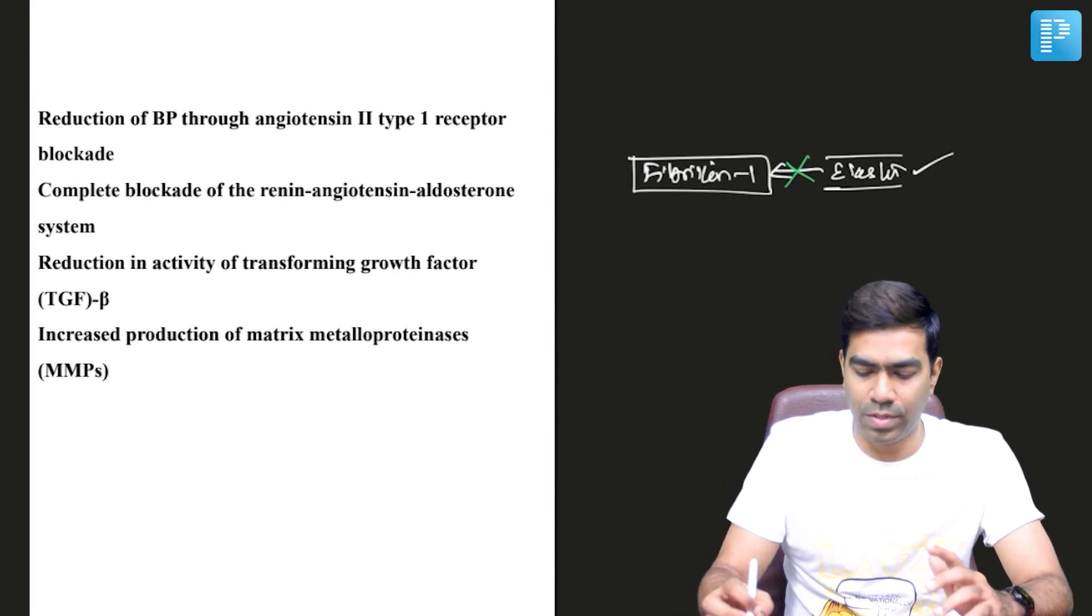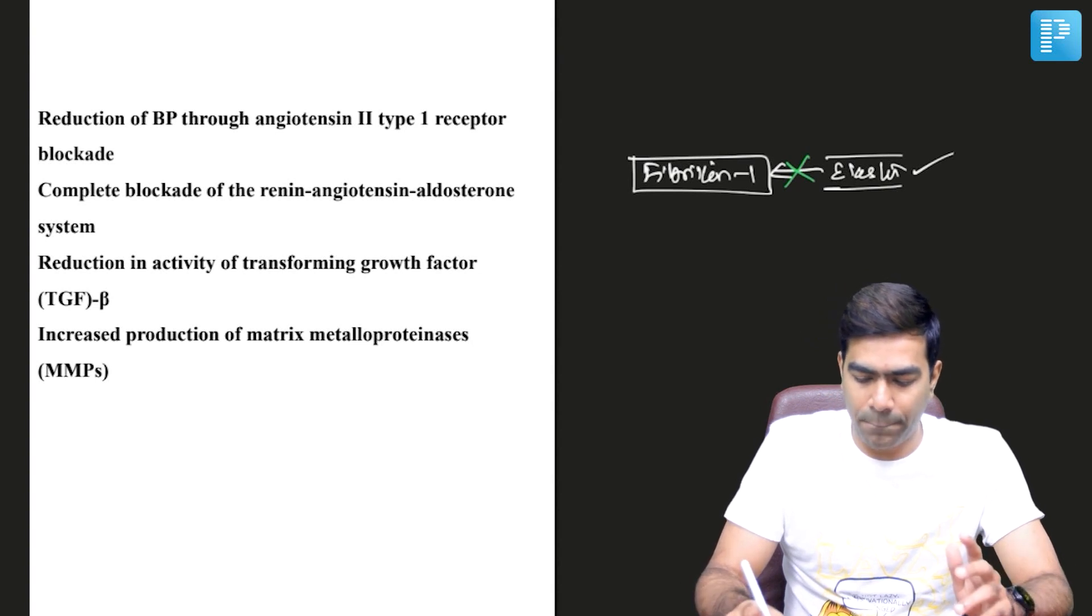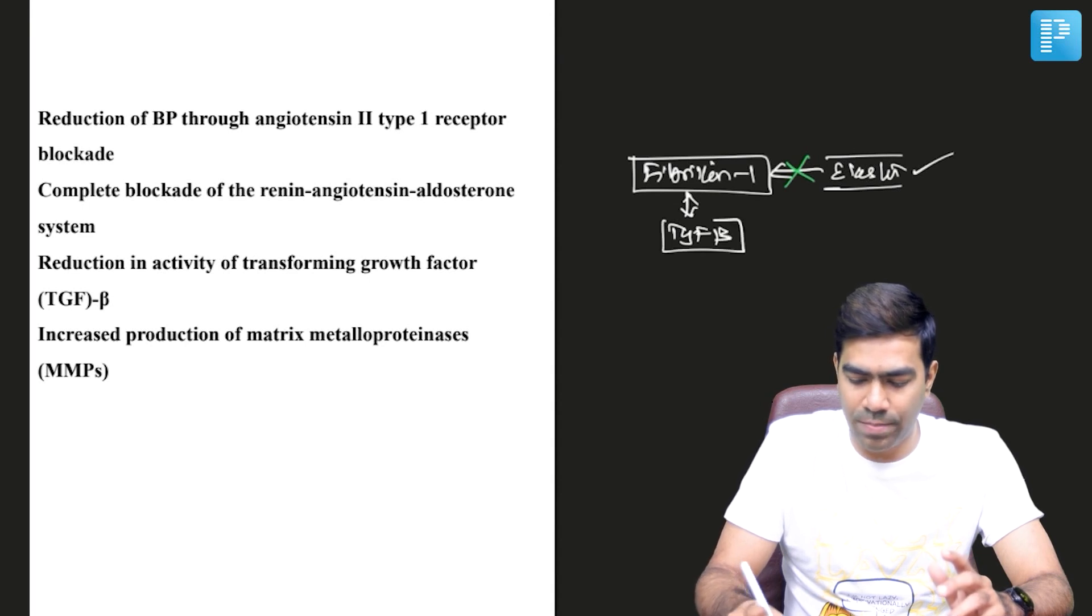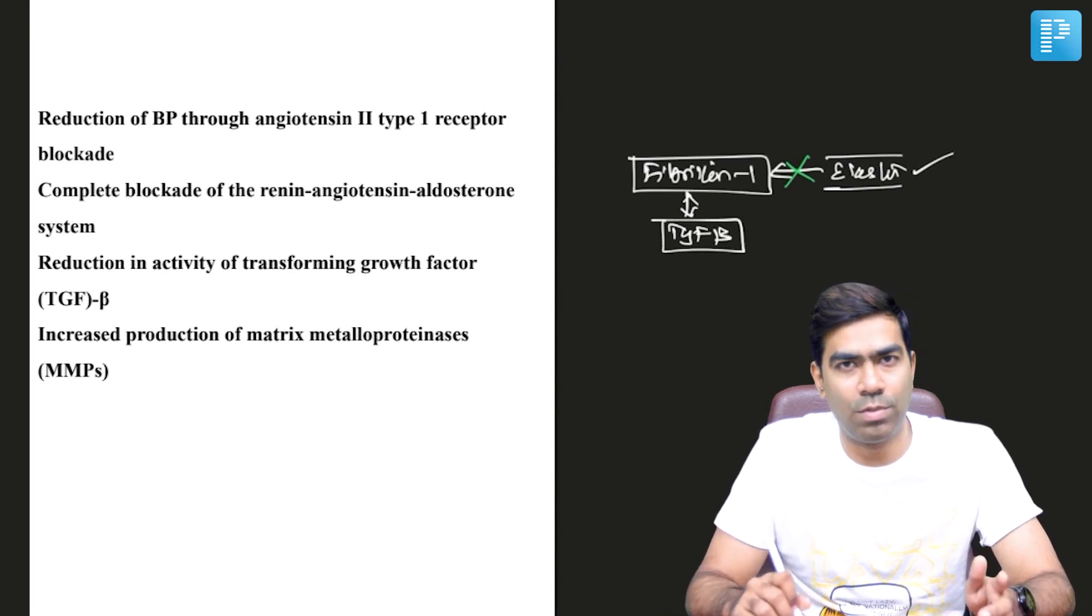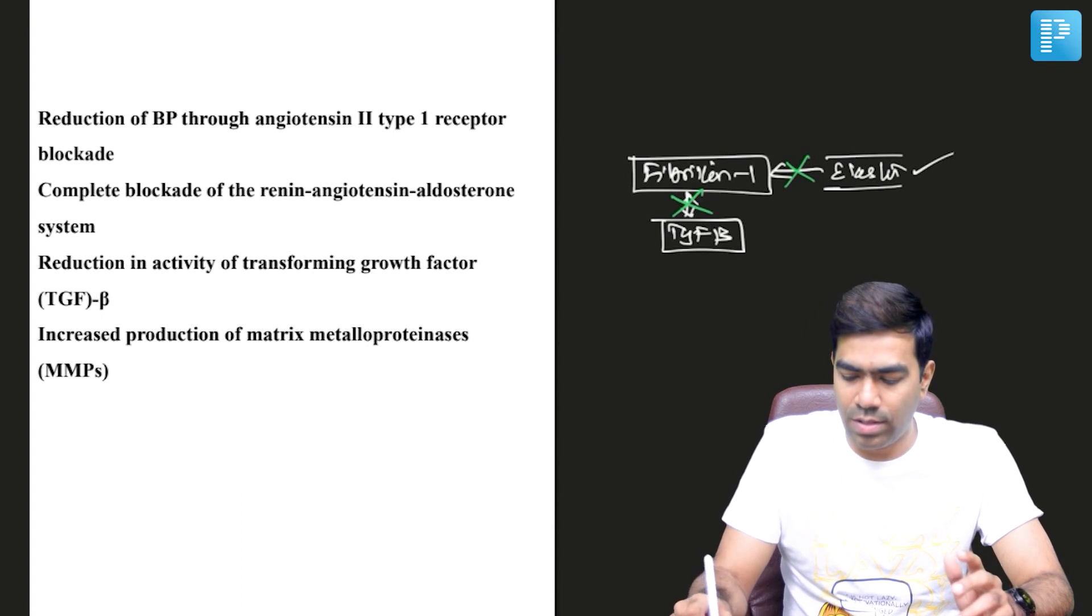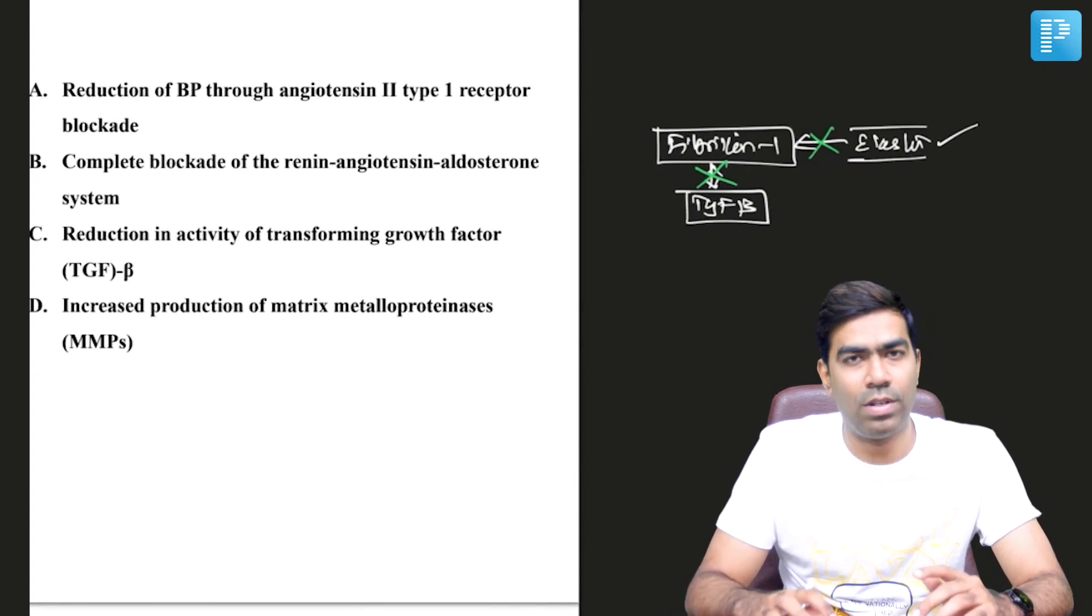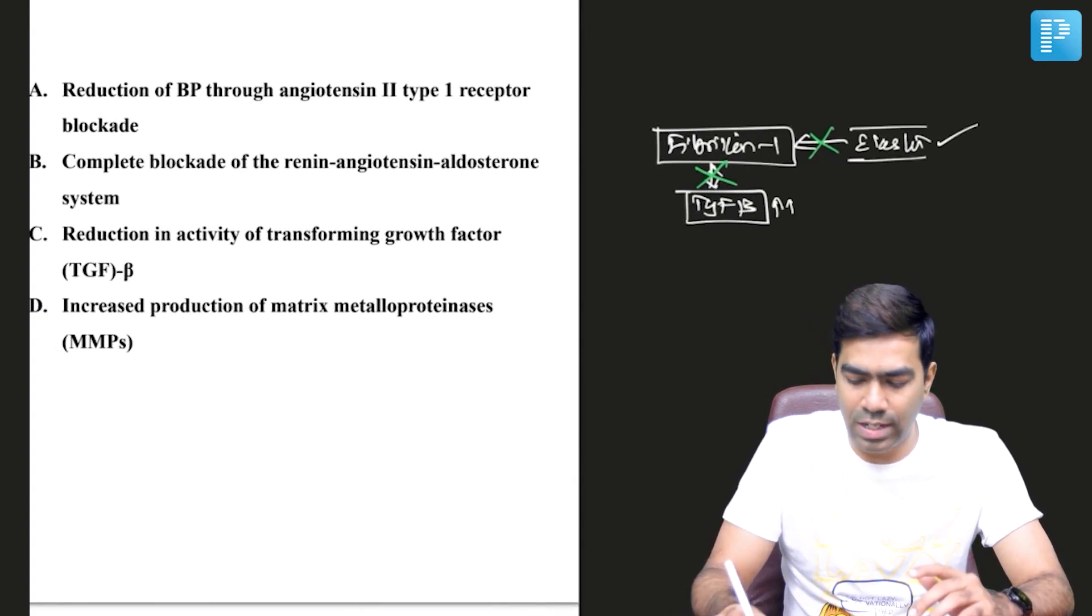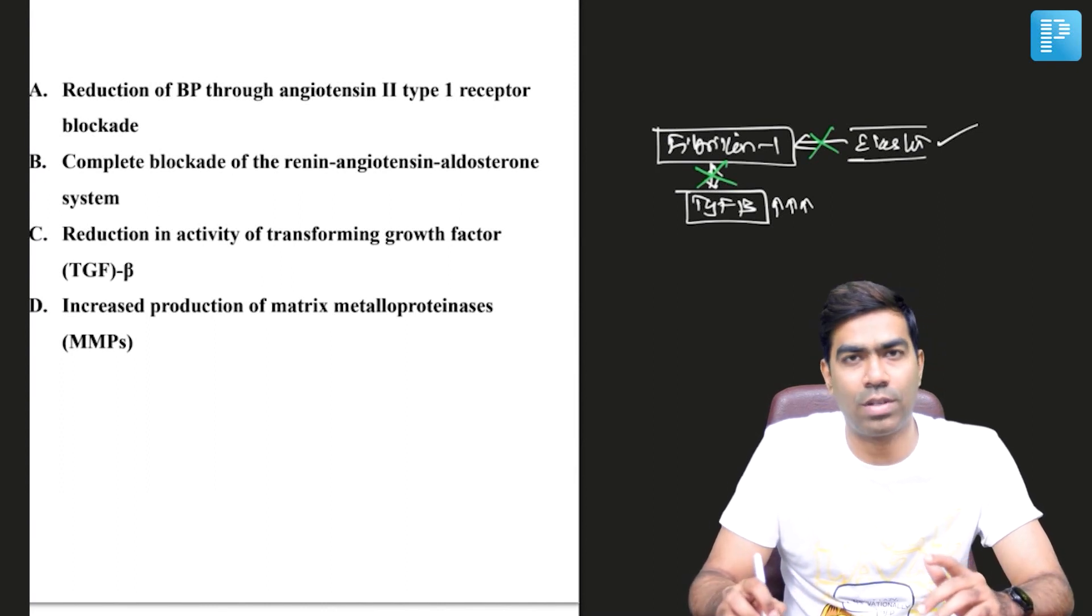Second, fibrillin-1 also binds to another molecule called TGF-beta. Because of the fibrillin-1 gene mutation in Marfan syndrome, TGF-beta cannot bind properly, which results in increased local concentrations of TGF-beta—that is, transforming growth factor beta.